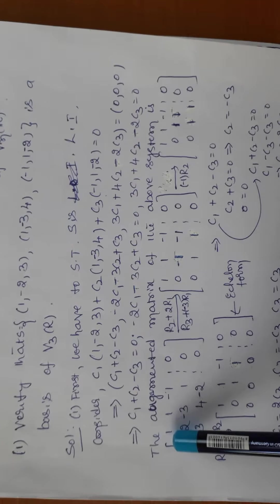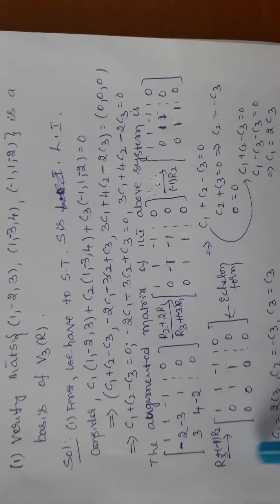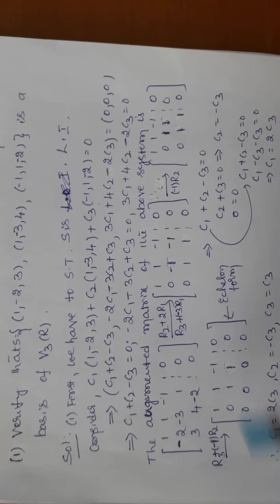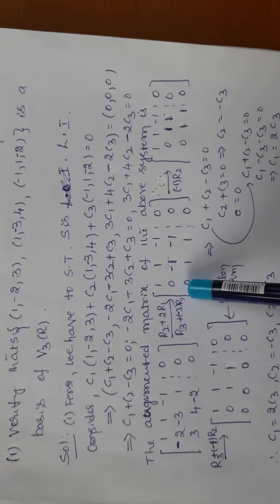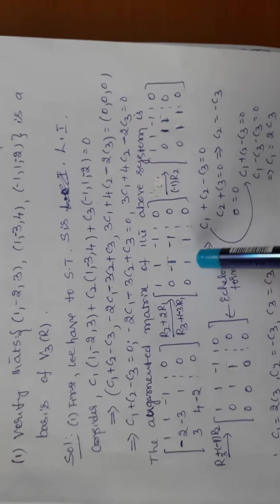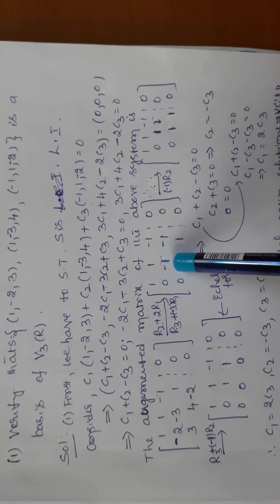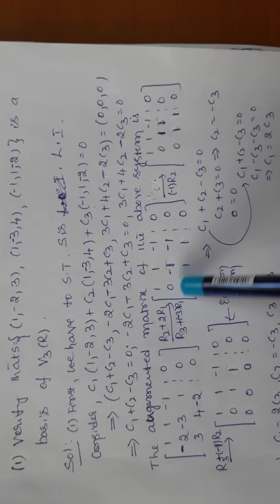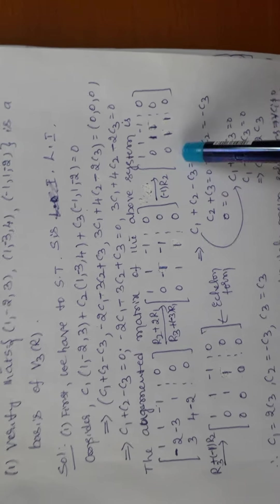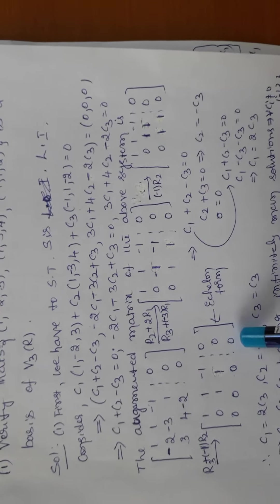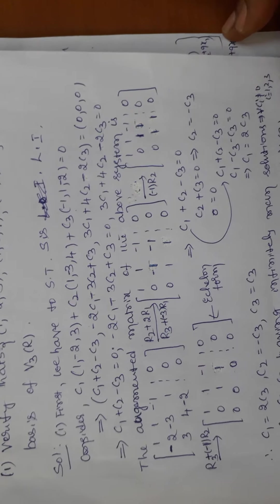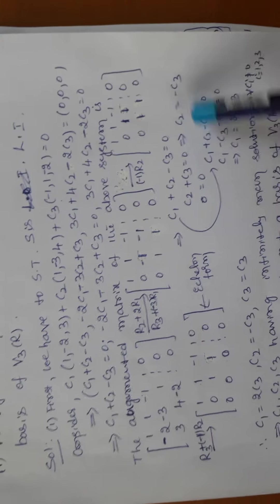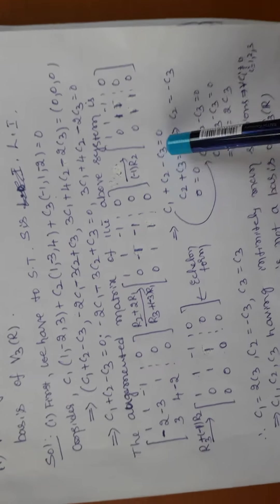The first row's first element is non-zero and is the pivot element. We convert the rest of the first column to zero using R2 + 2R1 and R3 - 3R1 to get the resultant matrix. Then the second row's second element must be non-zero as the next pivot. Multiplying by -1, we observe the two rows become equal, so one row becomes zero, reducing to echelon form.